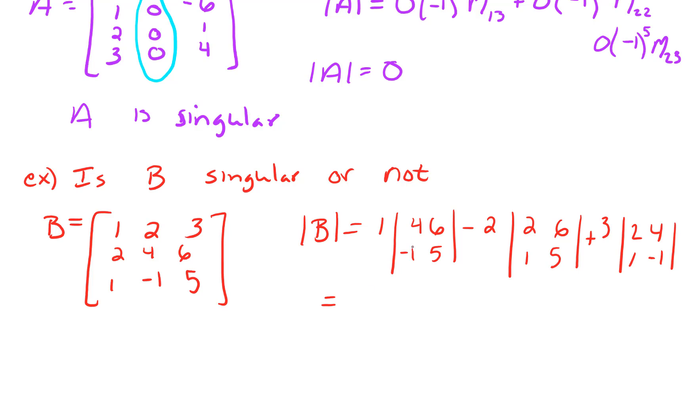And working this out, what we get here is we get 20 minus negative 6, so that's 26. Minus 2 times 10 minus 6, so that's negative 2 times 4, that's negative 8. And 3 times negative 2 minus 4, that's 3 times negative 6, that's negative 18. And indeed, the determinant is 0, so we would say B is singular.